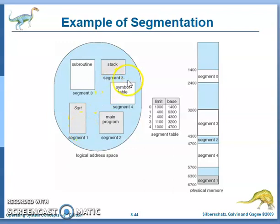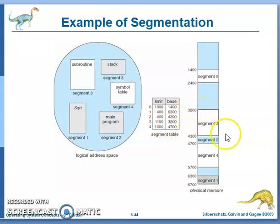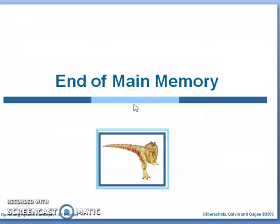As an example: segment 0 is the subroutine starting at base 1400 with limit 1000, covering addresses 1400 to 2400. Segment 3 starts at base 3200 with limit 1100, covering up to 4300. This illustrates how segments 0 through 4 map to different regions of physical memory. Thank you very much — this is the end of the memory management topic.